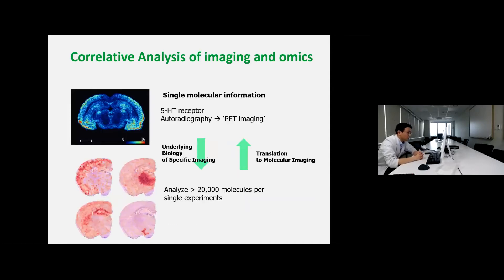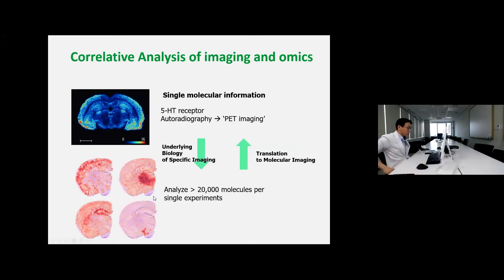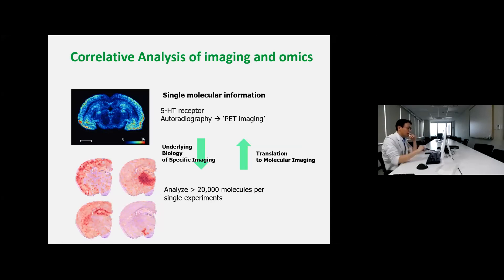These types of spatial omics can be integrated with our imaging analytical technology and can provide new targets for theranostic or imaging agents. By using single cell molecular information combined with our autoradiography or PET imaging technology, we can understand the underlying biology of specific imaging. Using a lot of molecular information, we can translate it to molecular imaging. For example, if we want to know what is the best target for a specific area, we can use genomic profiles to suggest new molecular imaging targets, and use this information for the development of new imaging or theranostic drugs.